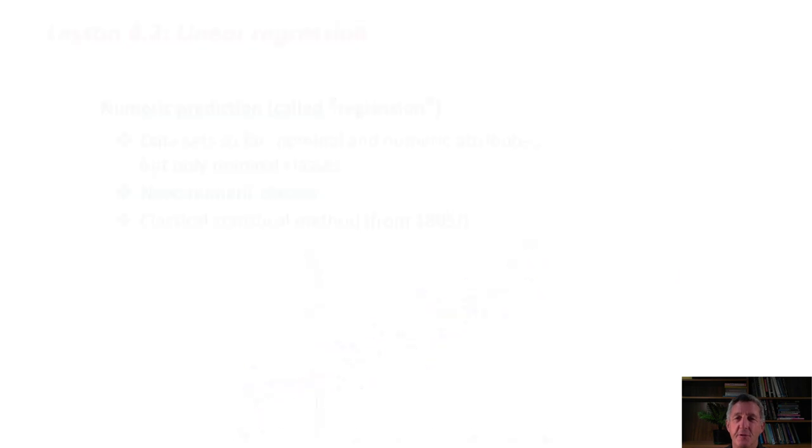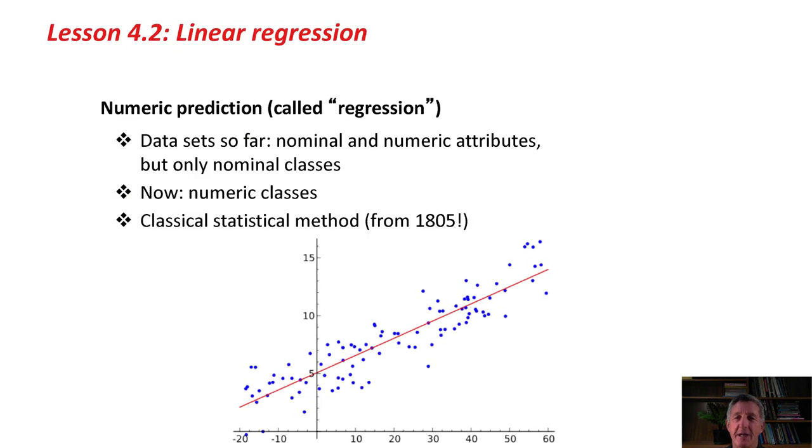We've only had nominal classes so far, so now we're going to look at numeric classes. This is a classical statistical method, dating back more than two centuries. This is the kind of picture that you see. You've got a cloud of data points in two dimensions, and we're trying to fit a straight line to this cloud of data points and work on the best straight line fit.